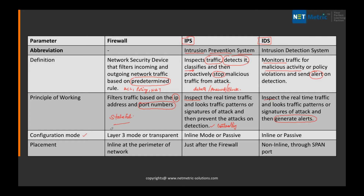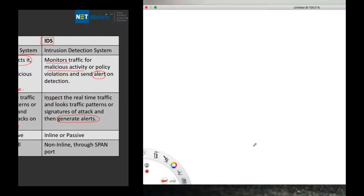What is the configuration mode? A firewall can be deployed in Layer 3 mode, which we call routed mode, or maybe in transparent mode. IPS and IDS can be deployed in inline as well as passive mode. For placement, the firewall will be positioned just next to the network where the ISPs are at the perimeter level. IPS is just next to the firewall, and IDS we generally deploy with respect to a SPAN path.